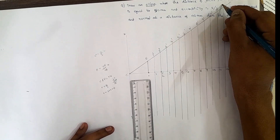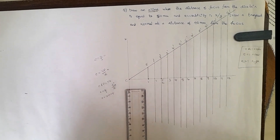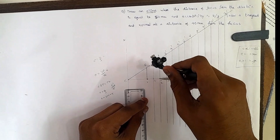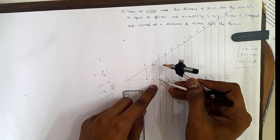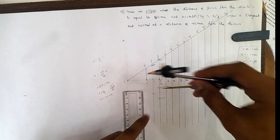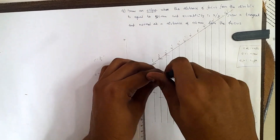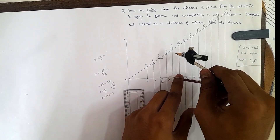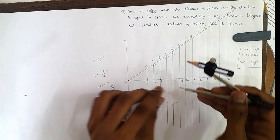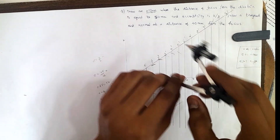Take a compass and measure the distance between 1 and 1 dash. From the focus, draw a curve on line 1 dash. Similarly, take the distance between 2 and 2 dash from the focus and draw curves on the second line. Repeat this process for lines 3, 4, 5 and so on — taking each pair distance from the focus and drawing a curve on the corresponding line.